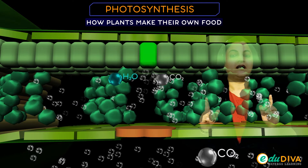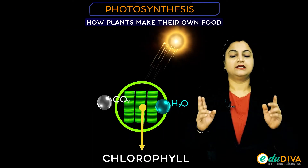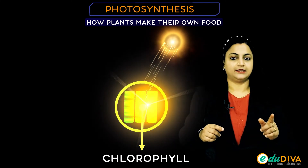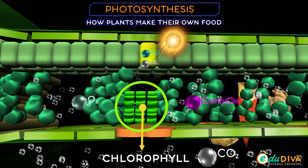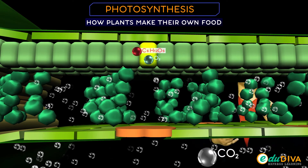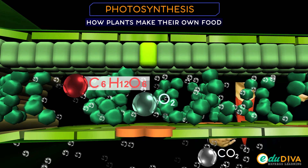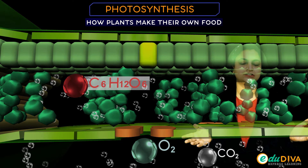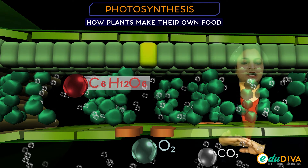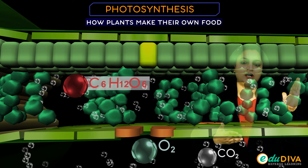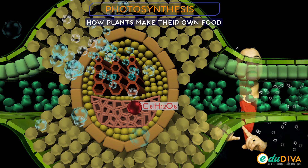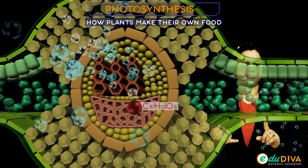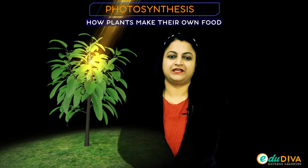Carbon dioxide and water will make glucose and oxygen. This is the whole process of photosynthesis.